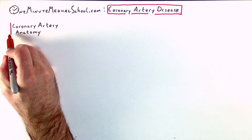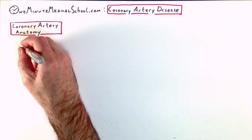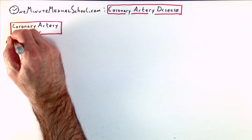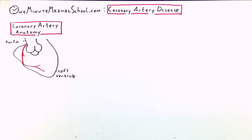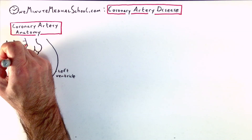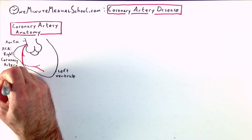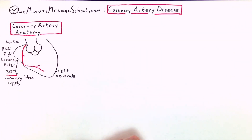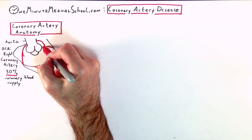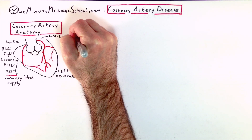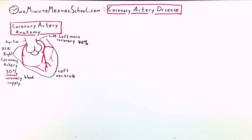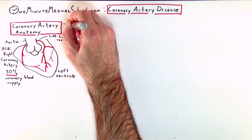You've got three blood vessels that supply your heart: the right coronary artery, which takes up 30% of the supply; the left anterior descending, which needs 40% of the supply of your heart; and the left circumflex, which carries 30% of the supply.